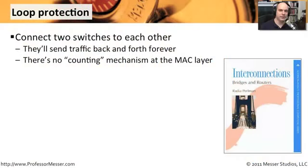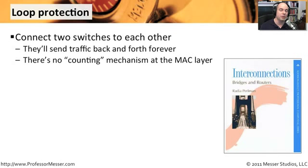A very common way to create problems on a network is to build a loop — to connect two switches to each other and then connect them to each other again, and watch the packets start circling between them as fast as they can go. As they go by, more traffic gets onto the network and more traffic starts looping, until you completely overwhelm your infrastructure devices because of all the packets looping back and forth.